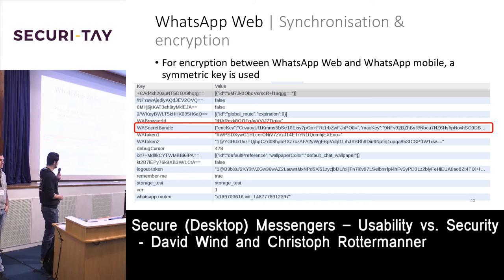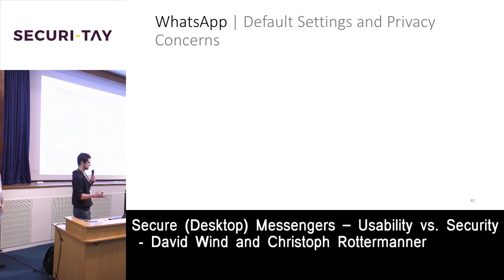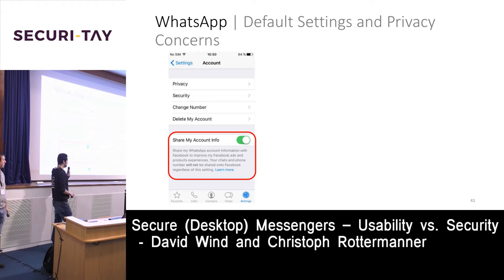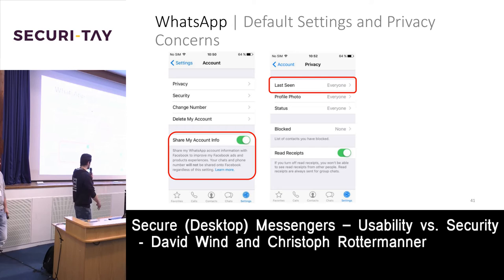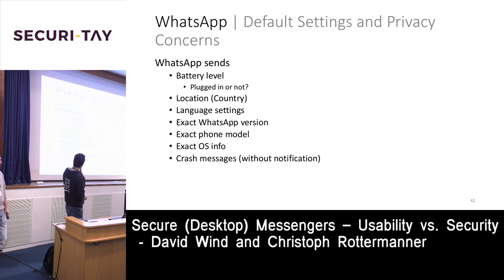Regarding default settings and privacy: WhatsApp Web uses the settings of the mobile app. The default settings on iPhone include 'share my account info' which shares data with Facebook — enabled by default. Last seen and everything else is also enabled by default, allowing tracking of when a person sleeps or wakes up. And show security notifications is disabled by default.